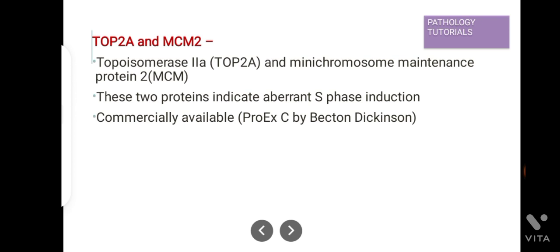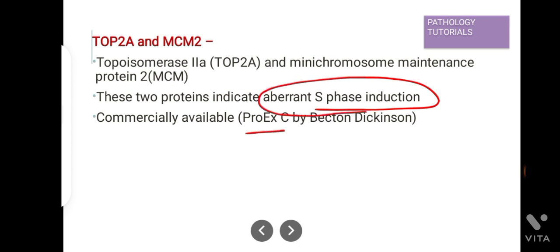Next are TOP2A and MCM2. Topoisomerase 2A and mini chromosome maintenance protein 2 — these two proteins indicate aberrant S-phase induction. Detection is done by ProEx C, which is commercially available.